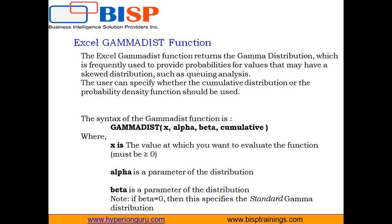This function takes four arguments. The first one is x, which is the value at which you want to evaluate the distribution. The second argument is alpha, which is a parameter of the distribution. The third argument is beta, which is also a parameter of the distribution. Note that if beta equals 1, then GAMMA.DIST returns the standard gamma distribution.